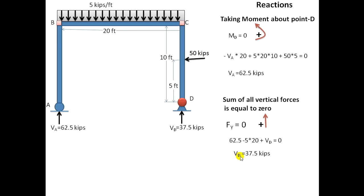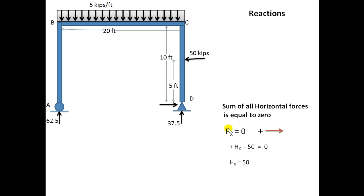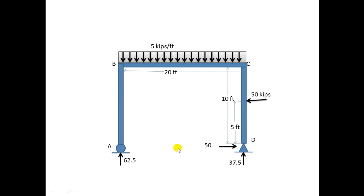You can watch my other video for more detail on finding reactions. Taking the sum of all horizontal forces equal to zero, I get the horizontal reaction of 50 kN, acting only at the pin support. At the roller there is no horizontal reaction.